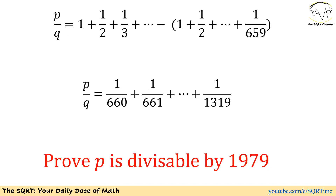Now we have the expression as follows. On the positive side we have 1 plus 1 over 2 plus 1 over 3 and so on so forth, and on the negative side we have 1 plus 1 over 2 plus 1 over 3 up to 1 over 659. It is easy to see that they have common terms that we can remove, starting from the first term all the way to 1 over 659. If we remove all those terms, we end up with P over Q equal to 1 over 660 plus 1 over 661 and so on.